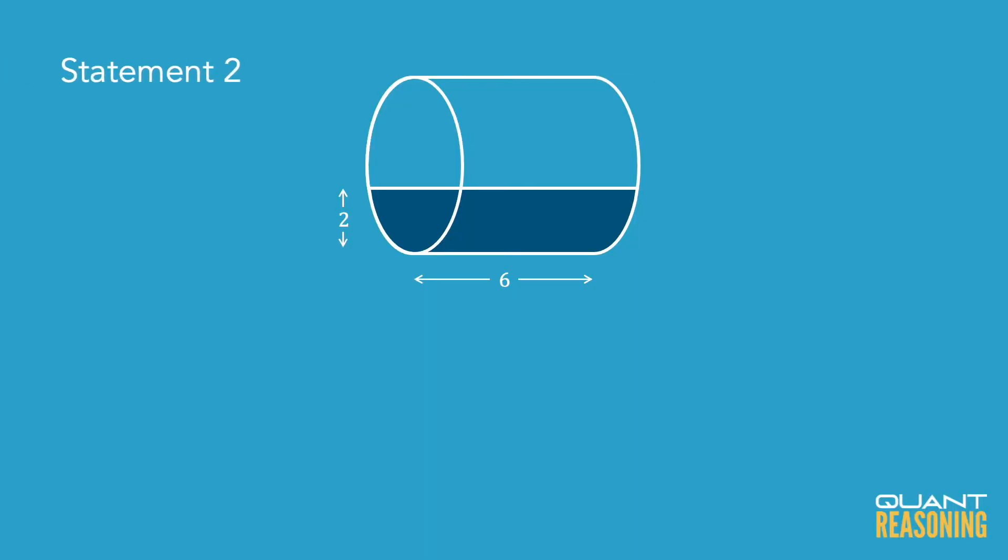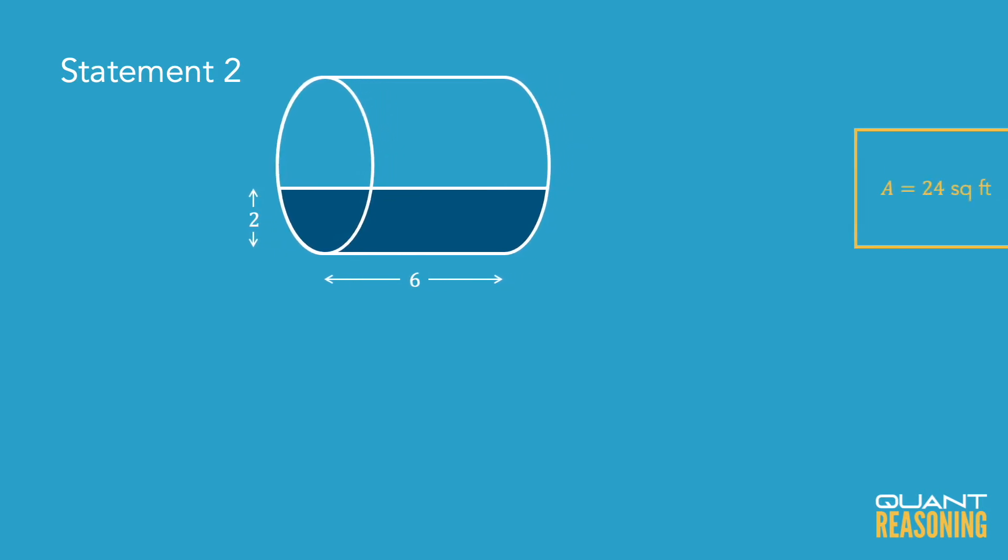So that gets us to statement two, which I think is really, really interesting. Statement two tells us that the surface area of the top of the gasoline is 24, but don't forget, we know the length of the cylinder is 6. So then the missing link there, the width of the gasoline at the top, must be 4. Okay, so we know that the width of the gasoline at the top is 4, and we know that the depth of the gasoline is 2.